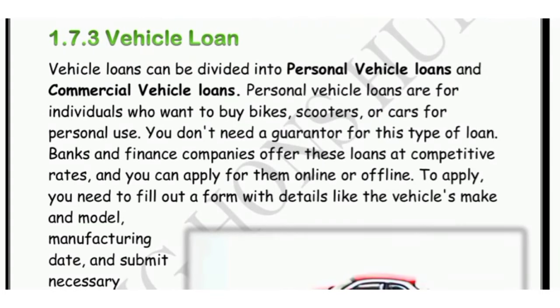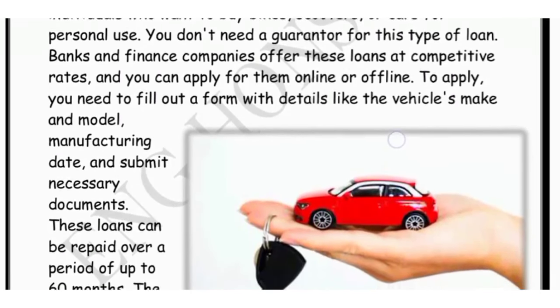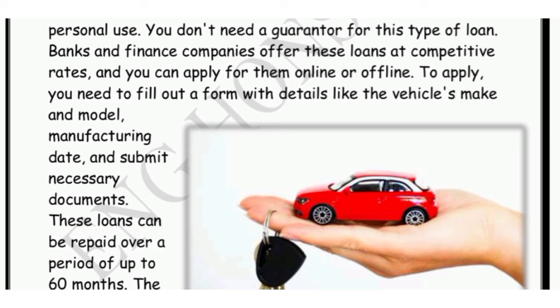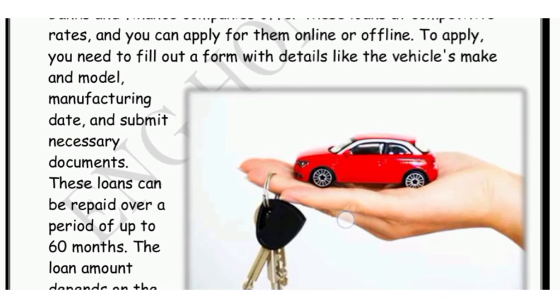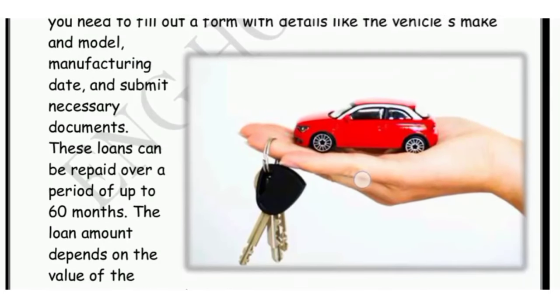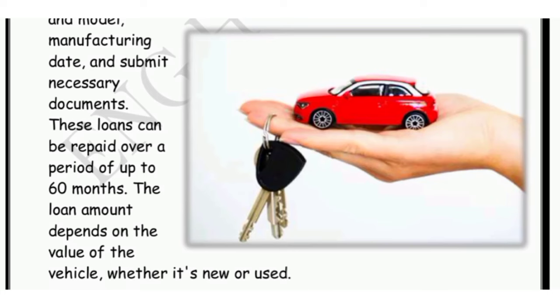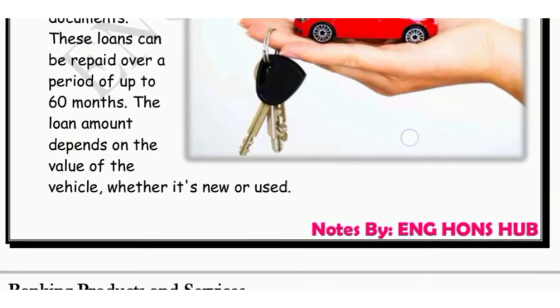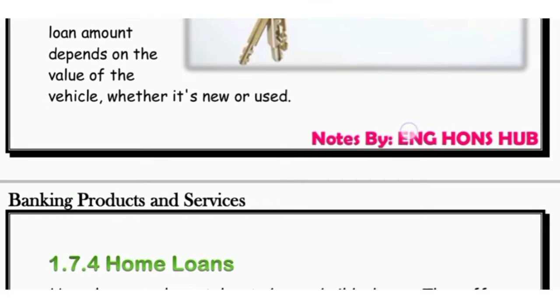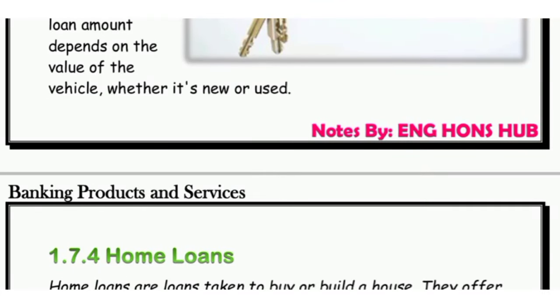Phir hai vehicle loan. Vehicle loan bhi do tarah ka ho sakta hai - personal vehicle loan jab hum apne liye koi vehicle lete hain jaise scooty ya bike, aur commercial vehicle loan jaise auto lete hain public ke liye. Iske liye koi guarantor ki zarurat nahi padti. Yeh bank aur finance companies competitive rates pe offer karte hain. Hum offline aur online dono tarah se apply kar sakte hain. Form fill karna padta hai jismein car/vehicle ka model, manufacturing date likhni padti hai aur documents jama karwane padte hain. In loans ko repay karna padta hai over 60 months ke period mein aur loan amount depend karta hai ki kitna mahanga vehicle le rahe hain.